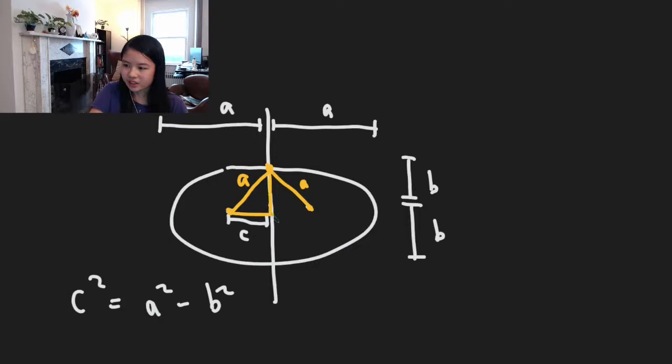So now we have this little right triangle in yellow with a, b, and c, and that gives us c² = a² − b². That's the second cool thing about ellipses.